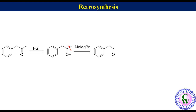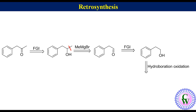The aldehyde can be obtained from phenyl ethyl alcohol, which in turn can be obtained by the hydroboration-oxidation of styrene.